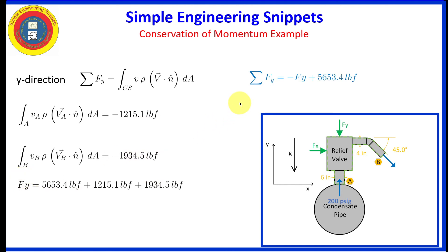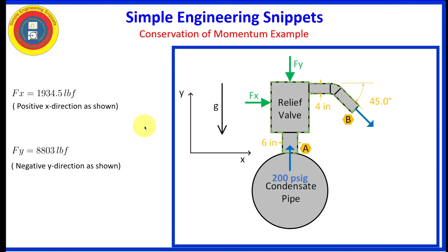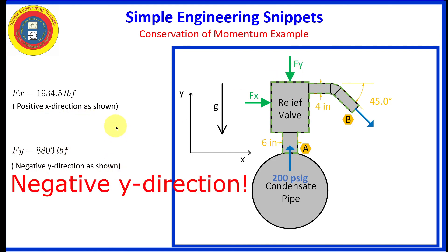Bringing everything together, the sum of the external forces equals minus F sub y plus the pressure force of 5,653.4 pounds-force. Solving for F sub y, we get 8,803 pounds-force. It is positive, which indicates we assumed the correct direction — so F sub y is acting in the minus y direction as assumed. The horizontal force is 1,934.5 pounds-force acting in the positive x direction, and the vertical force is 8,803 pounds-force acting in the negative y direction.